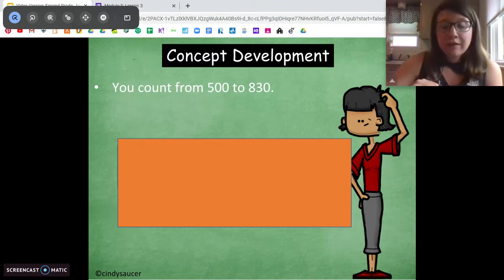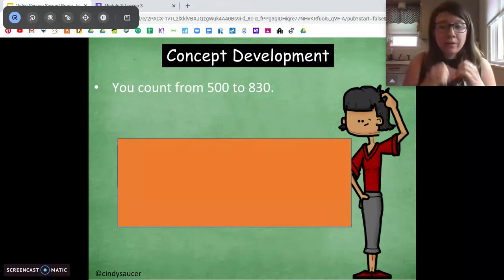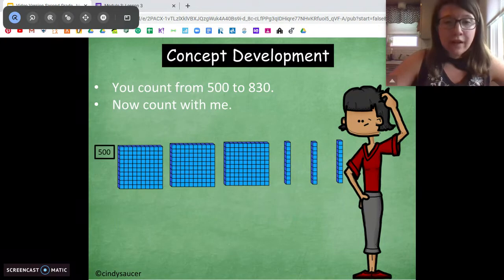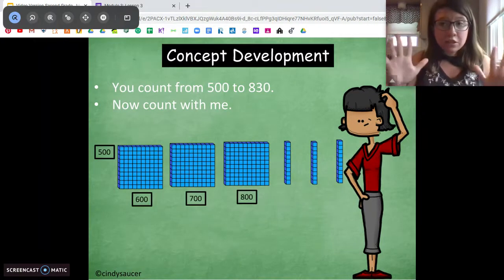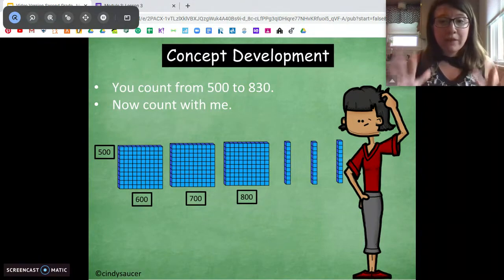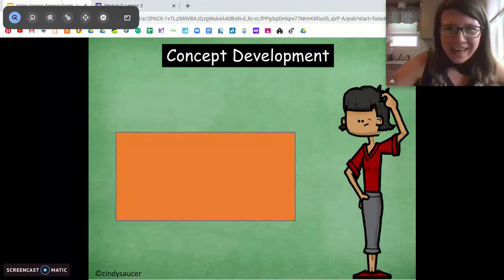All right. Try this one. Same idea. Start at 500. Count to 830 on your own. Come back when you're ready. Ready? Same thing as the last one. We're starting with a base 10 number. We're starting with 500. So we can start automatically by counting five hundreds. So we're at 500, 600, 700, 800. And I'm going to stop because I got to my 800. I got to the value I want to be at, but I have to add in those extra tens. So 800, 810, 820, 830. Yeah. Awesome.